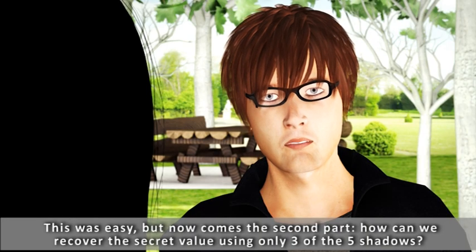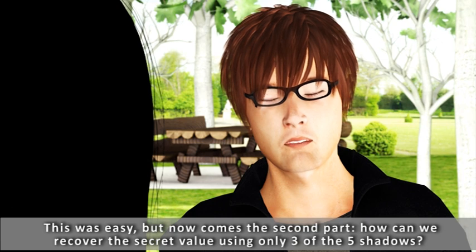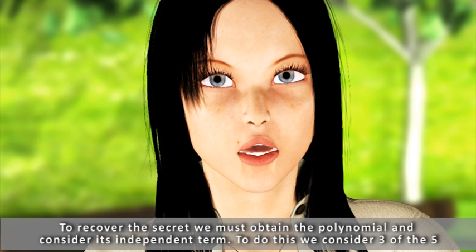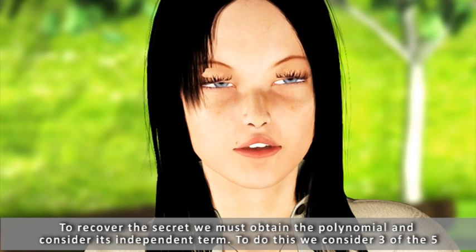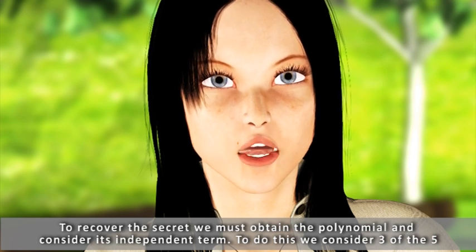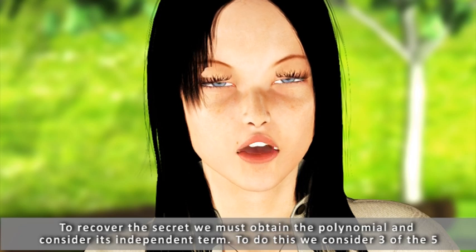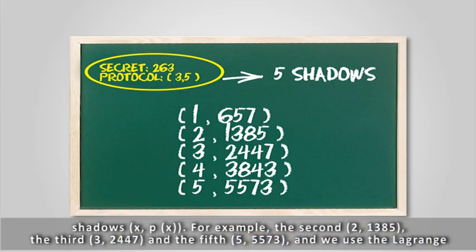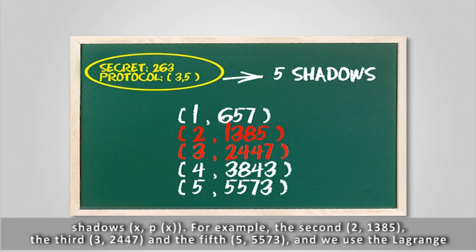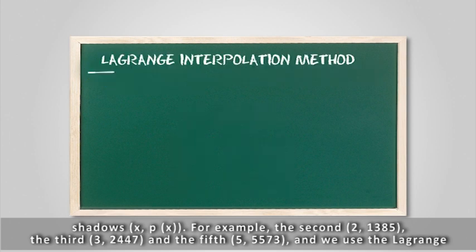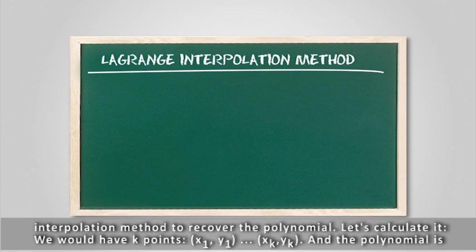This was easy. But now comes the second part. How can we recover the secret value using only 3 of the 5 shadows? To recover the secret we must obtain the polynomial and consider its independent term. To do this we consider 3 of the 5 shadows, for example, the second (2, 1385), the third (3, 2447) and the fifth (5, 5573), and we use the Lagrange interpolation method to recover the polynomial.